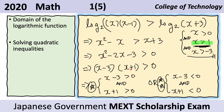The only way for the product to be positive is for x minus three and x plus one to have the same signs — both must be positive or both must be negative. For the positive case (star), x minus three greater than zero and x plus one greater than zero. For the negative case (double star), x minus three less than zero and x plus one less than zero.